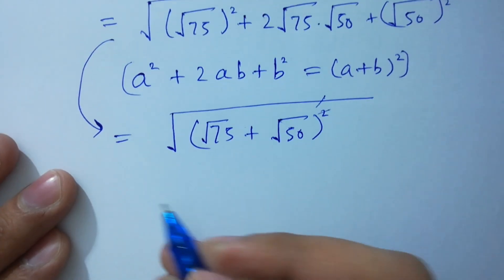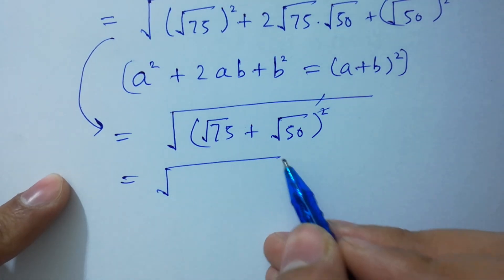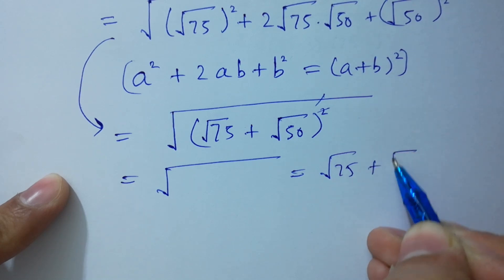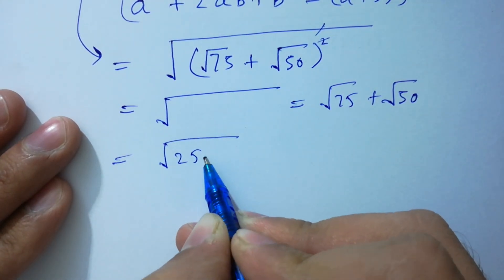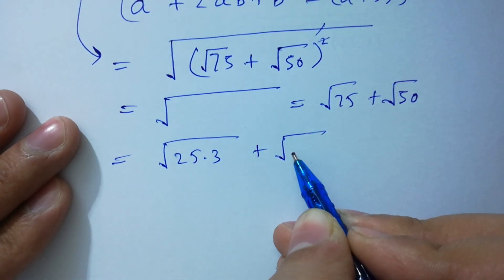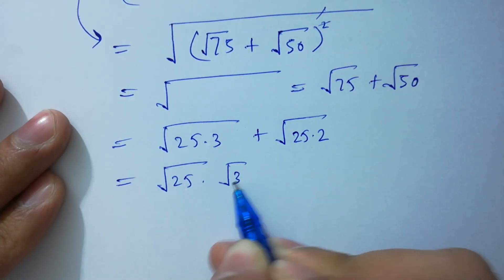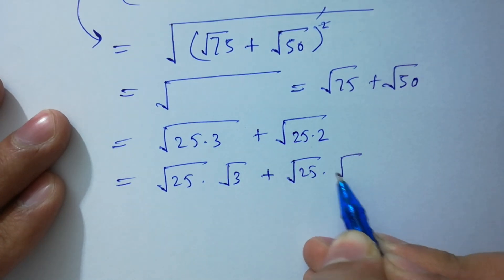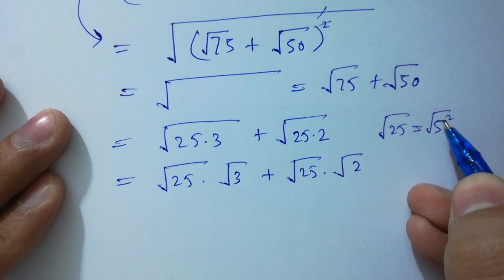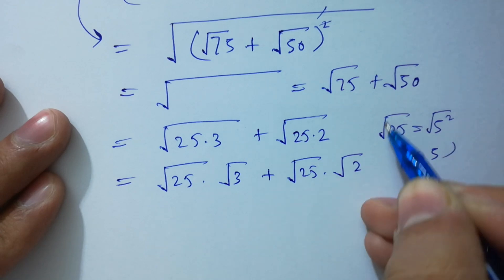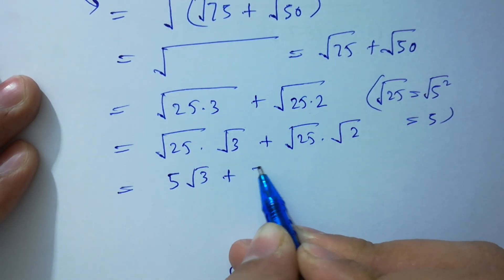The outer square and square root cancel, leaving square root of 75 plus square root of 50. Now, 75 is 25 times 3 and 50 is 25 times 2, so we have square root of 25 times square root of 3 plus square root of 25 times square root of 2. Since square root of 25 equals 5, this gives 5 square root of 3 plus 5 square root of 2.